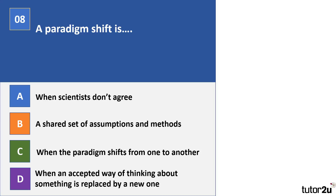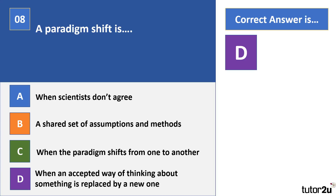Question 8. A paradigm shift is A, when scientists don't agree, B, a shared set of assumptions and methods, C, when the paradigm shifts from one to another, or D, when an accepted way of thinking about something is replaced by a new one. The correct answer is D. Option A is how paradigm shifts come about; option B describes a paradigm itself; option C is a circular description using the term in the answer.